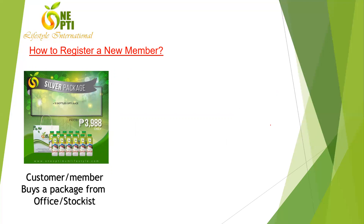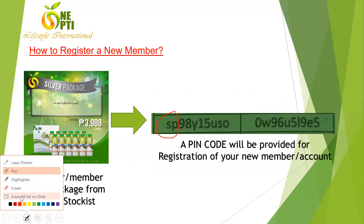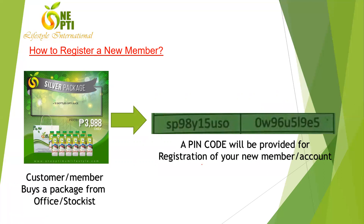Here's what will happen: your customer or member buys a package from the office or a mobile stockist, and you'll be given a code. For a silver package, the first letters of the code are 'SP'; for a gold package, you'll see 'GP'. That's how you identify which package the customer purchased.